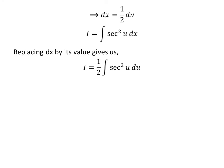Replacing dx by (1/2)du gives us I = (1/2)∫sec²(u)du, as 1/2 is a constant so it is taken out of integral.